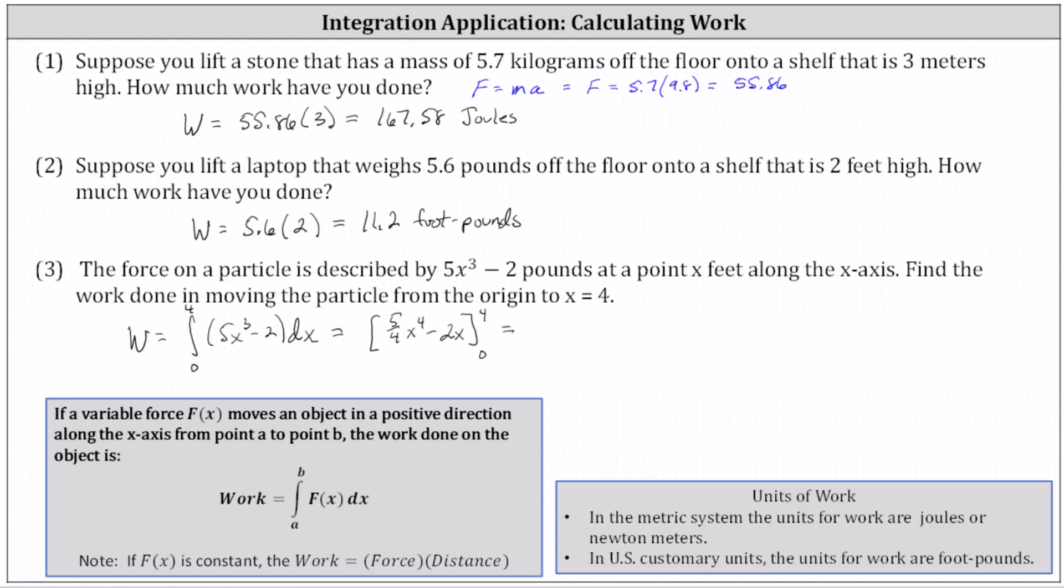Now, we determine big F of four minus big F of zero, which gives us (5/4) times the fourth power of four minus two times four, and then minus, when x is zero, notice both terms are zero.